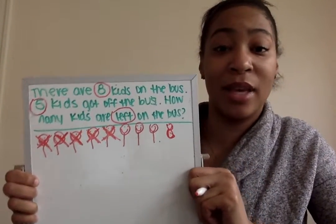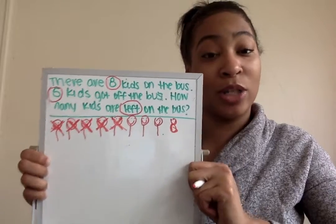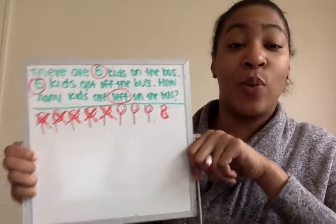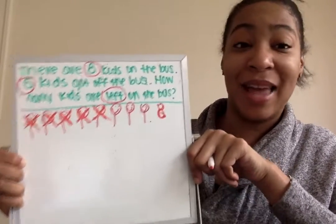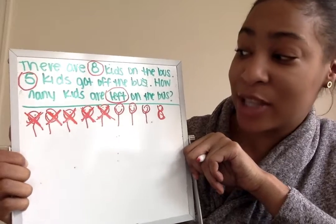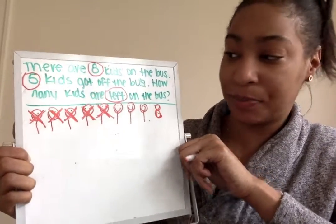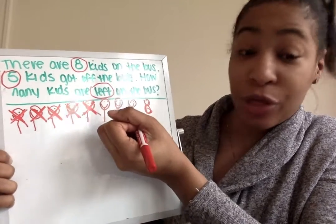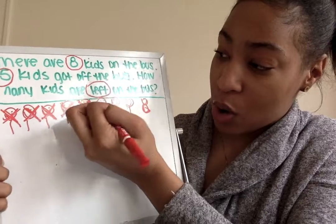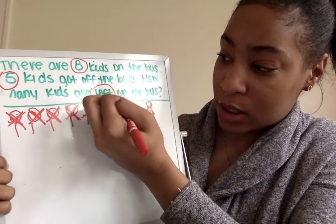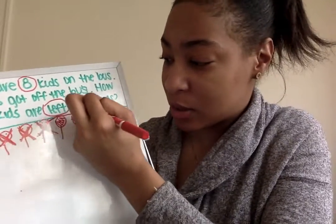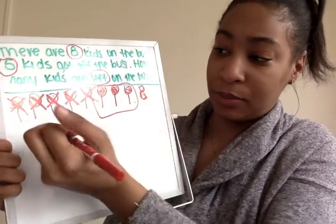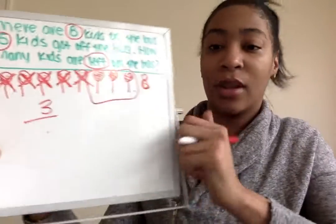Now that we've crossed off five kids to represent the five that got off the bus, what should we do last to get our answer? That's correct — we should count how many kids we have left on the bus, because the question says: how many kids are left on the bus? So we have 1, 2, 3. Let's just make sure: 1, 2, 3. And I'm going to circle this. So how many kids do we have left on the bus? Three — that is correct.